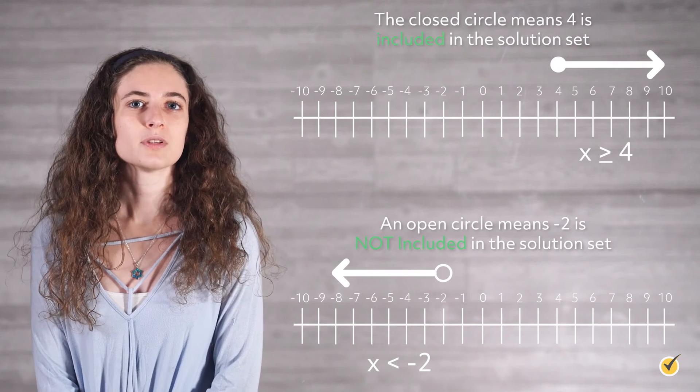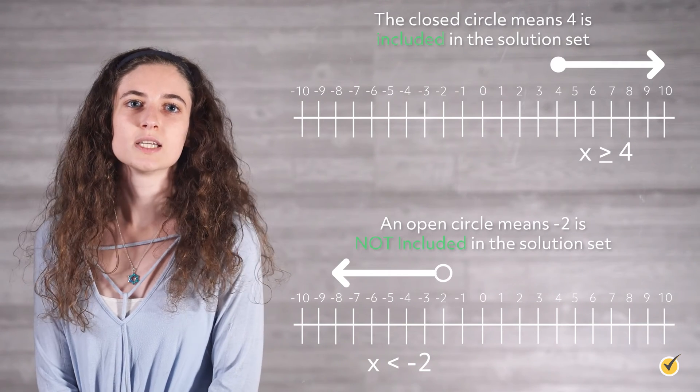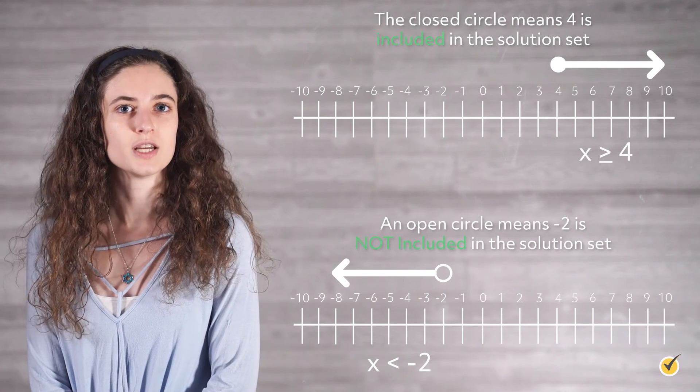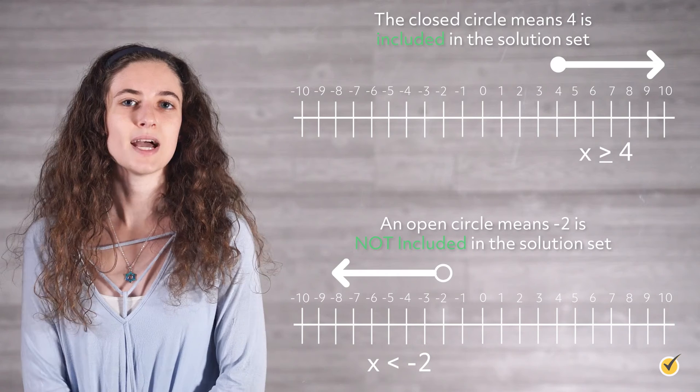We can modify this notation slightly to include the critical value by using less than or equal to and greater than or equal to symbols — note the line under the symbols. Using the previous examples, x is less than or equal to 10 is the set of all numbers less than or equal to 10, and x is greater than or equal to 25 is the set of all numbers greater than or equal to 25. When inequalities are graphed on a number line, an open circle is used at the critical value to indicate that it is not included in the solution set, while a closed circle indicates that it is included, as shown here.